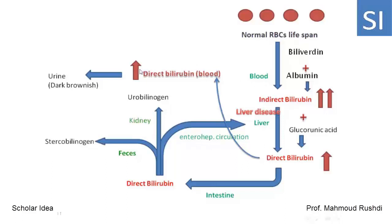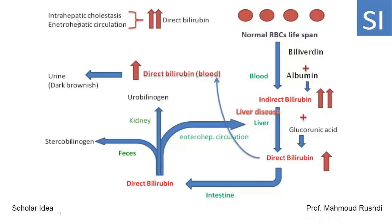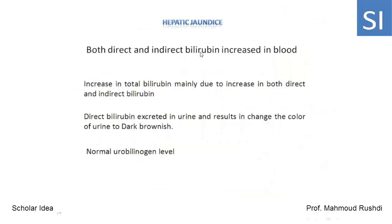From this diagram, the cause of hepatic jaundice is liver disease. Hepatic jaundice is characterized by: increased total bilirubin in the blood; increased direct bilirubin due to intrahepatic cholestasis and enterohepatic circulation; normal stercobilinogen level; normal urobilinogen level. The increased level of direct bilirubin in the blood, when excreted in urine, results in dark brownish coloration of urine. The increase in total bilirubin is mainly due to increases in both direct and indirect bilirubin.